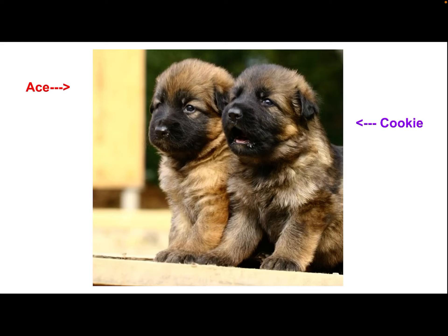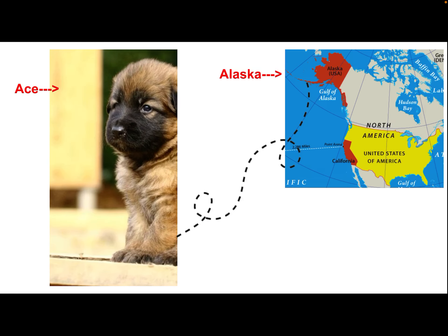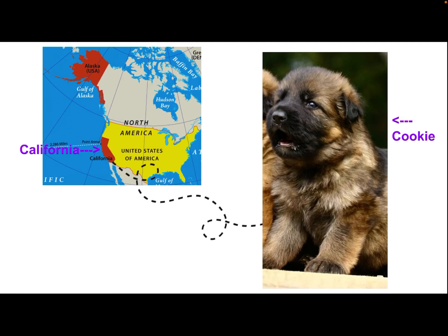They were born in the same place, but they were then separated when their owners bought them. Ace was bought by an owner from Alaska, and so Ace moved to Alaska — see where that dotted line leads to? Cookie, on the other hand, moved to California, Southern California, the bottom part of California. So they're in two different places now.